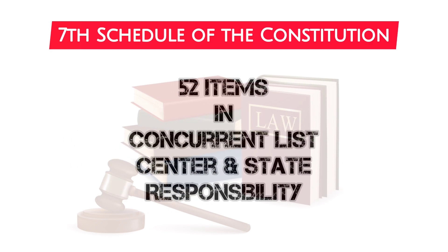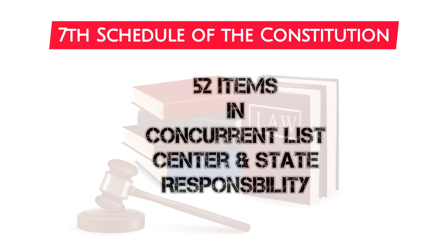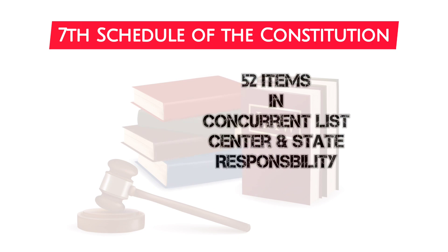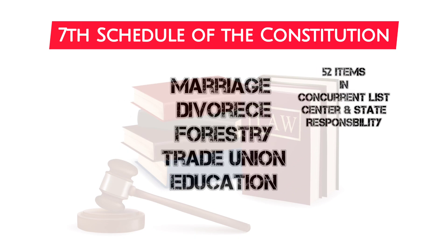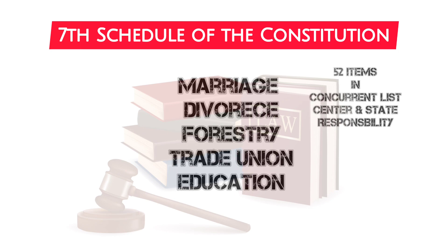There are 52 topics on the concurrent list that fall under both the Union and state's jurisdiction. These subjects include marriage and divorce, forestry, trade unions, and education.